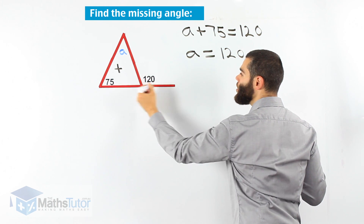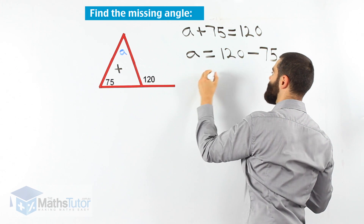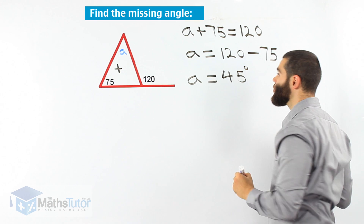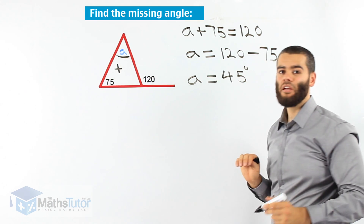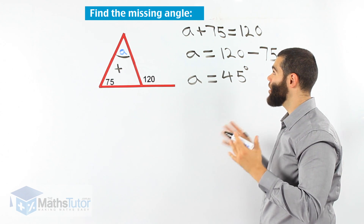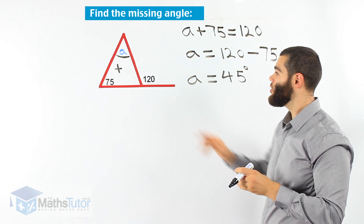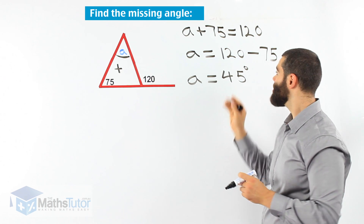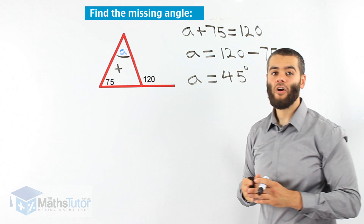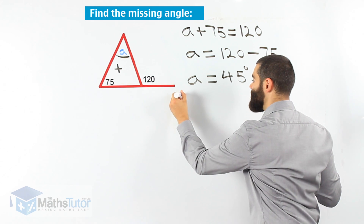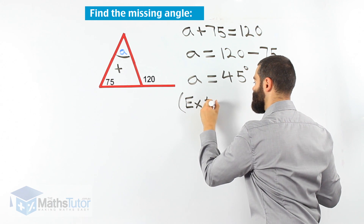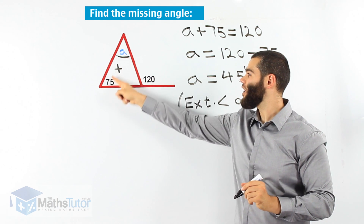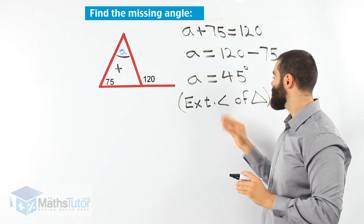120 is the total, minus 75 — so 120 take away 75 equals 45 degrees. Therefore A is 45 degrees. We worked using the opposite of the exterior angle rule: we know 120 degrees is outside and equals the two interior angles added together. So we take away 75 from 120. Our reason is exterior angle of a triangle. A is 45, and 45 plus 75 makes 120 — the exterior angle of a triangle rule works.